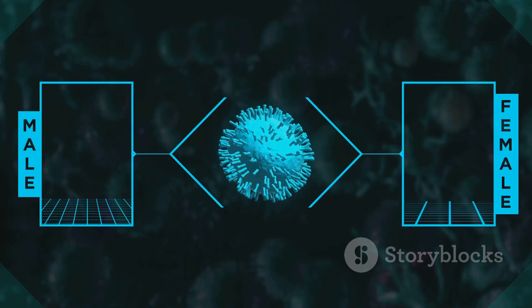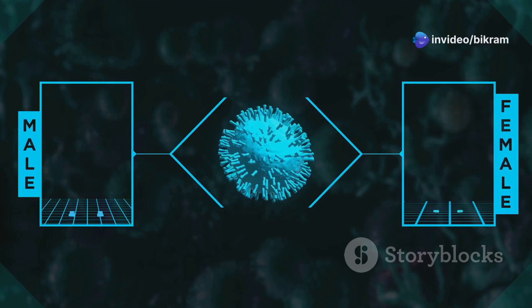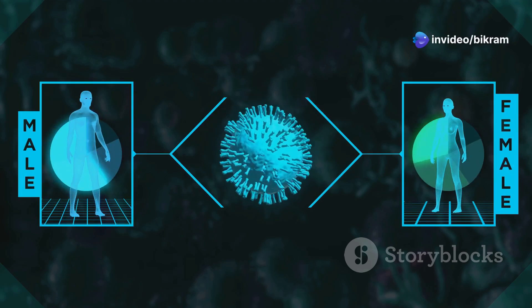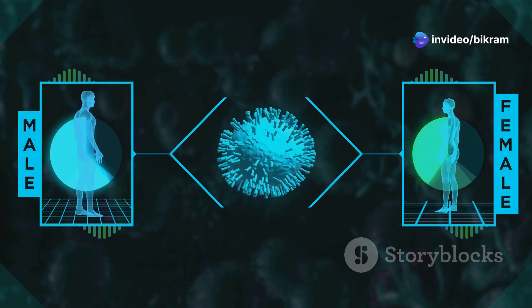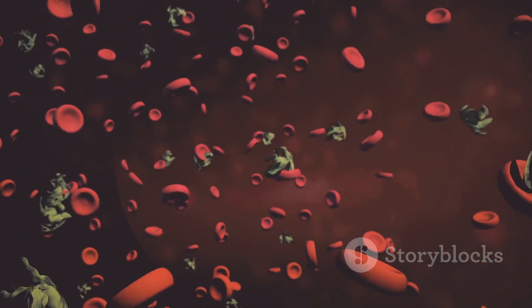Viruses, for instance, often produce dsRNA during their replication cycle. This dsRNA serves as a danger signal, alerting the cell to the presence of a viral infection. Cells have evolved sophisticated mechanisms to recognize and respond to this threat.